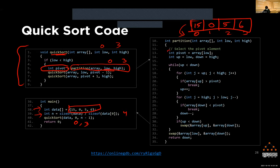In the partition function, we choose a pivot — in this case the pivot is always the first element of the array, which is 15. We use the terminology of 'up' and 'down': we keep moving 'up' until we find an element greater than the pivot, and keep moving 'down' toward the left until we find an element smaller than the pivot. We initialize up equal to 0 and down equal to 3, then apply the pseudo code: while up is less than down.